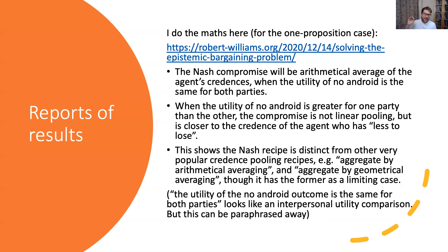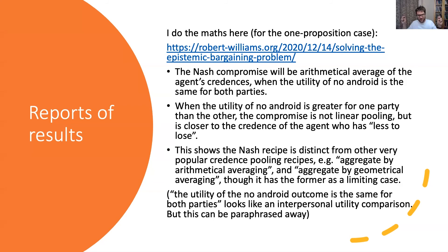Basically what this shows is that the Nash recipe is distinct from other very popular credence pooling recipes — for example, aggregating by unweighted arithmetical averaging or by geometrical averaging — though it has the former as a limiting case when the default utilities are equal. One thing to note: some results are framed in terms of saying the utility of the no-Android outcome is the same for both parties, which looks like an interpersonal utility comparison, but that can be paraphrased away.